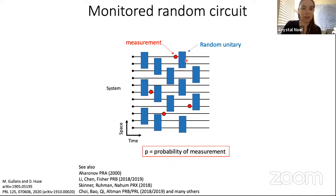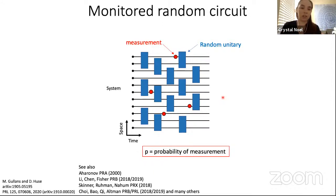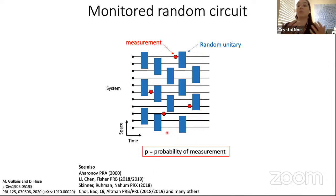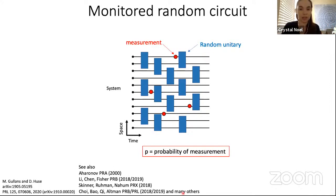We have random unitaries occurring over time that provide entangling dynamics. This model connects to ideas in condensed matter about percolation, as well as quantum error correction, where you have entanglement in your system but you measure in order to correct for errors. In this model, at each time step we measure the qubits with some probability p — you can think of this as a measurement rate. We can tune this measurement rate from having no measurements at all, all the way to measuring every single step.